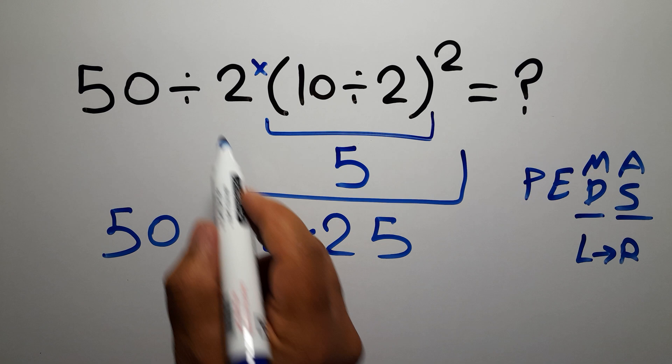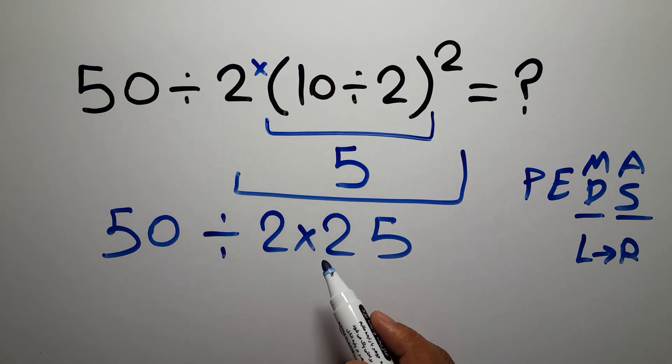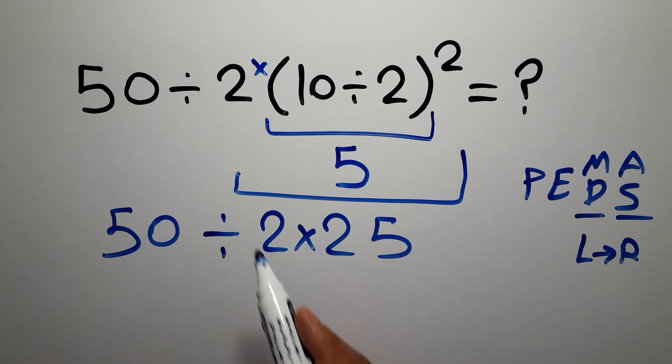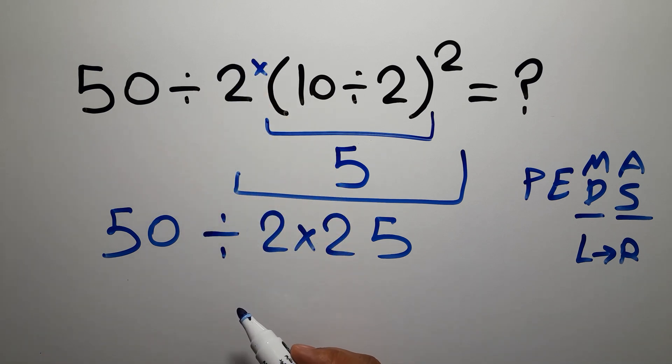Because in mathematics, when a number is placed next to parentheses, it means multiplication. We usually don't write the multiplication sign for brevity. So we have 50 divided by 2 times 25. Now we do this division: 50 divided by 2 is 25, and then...